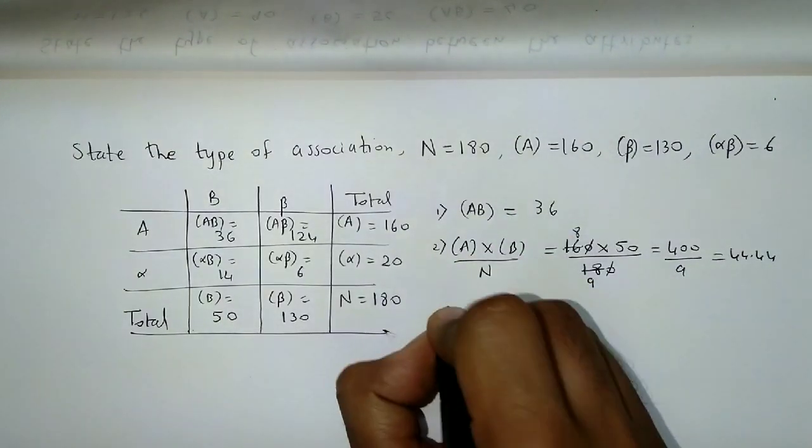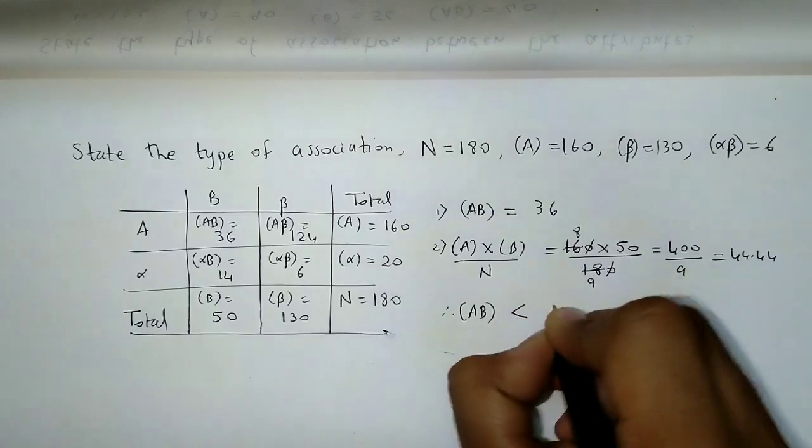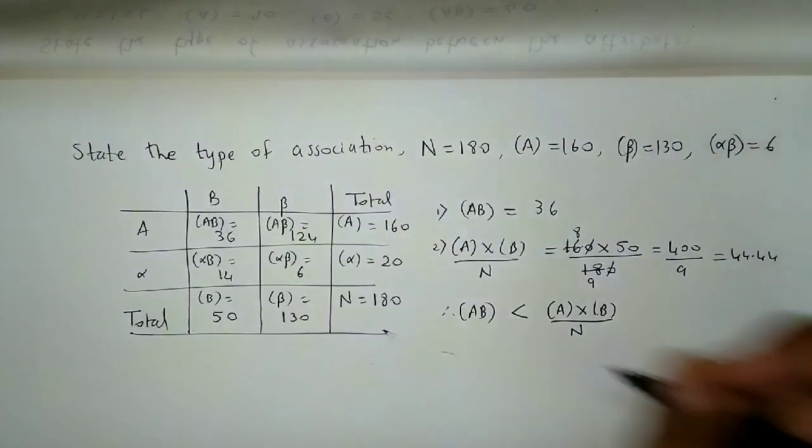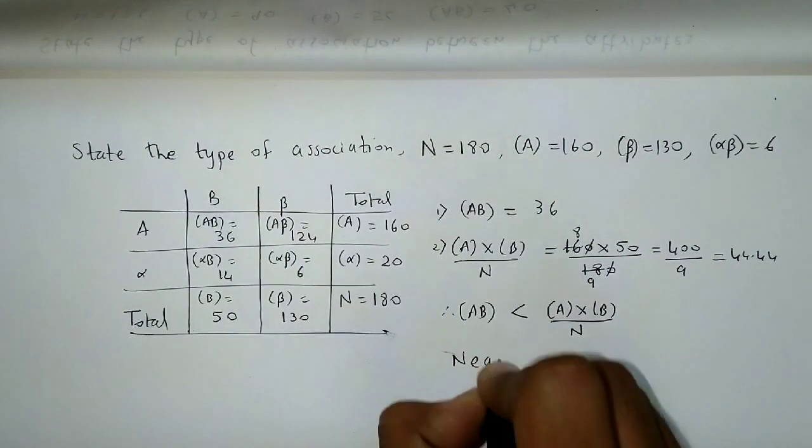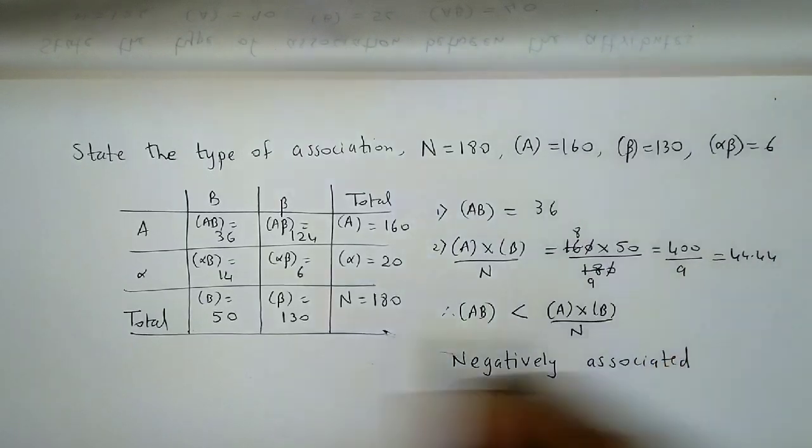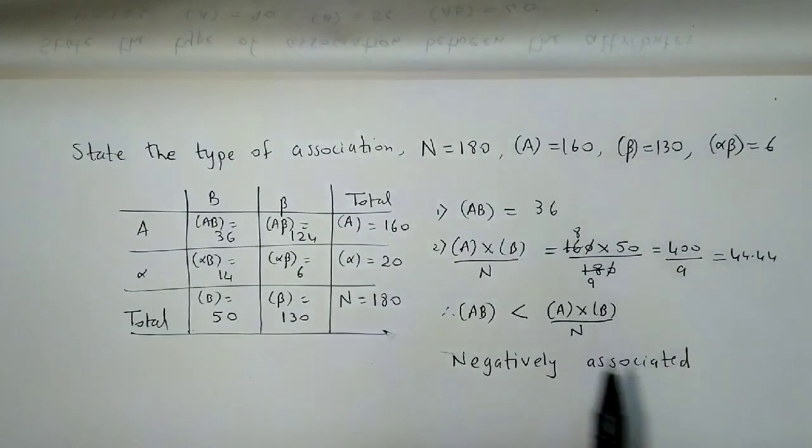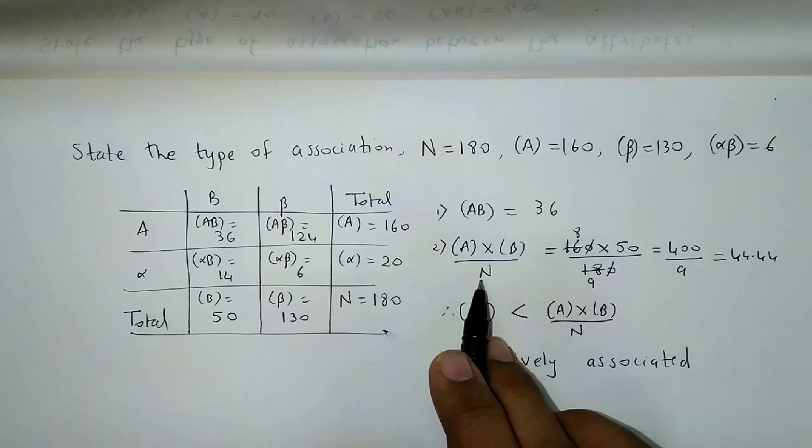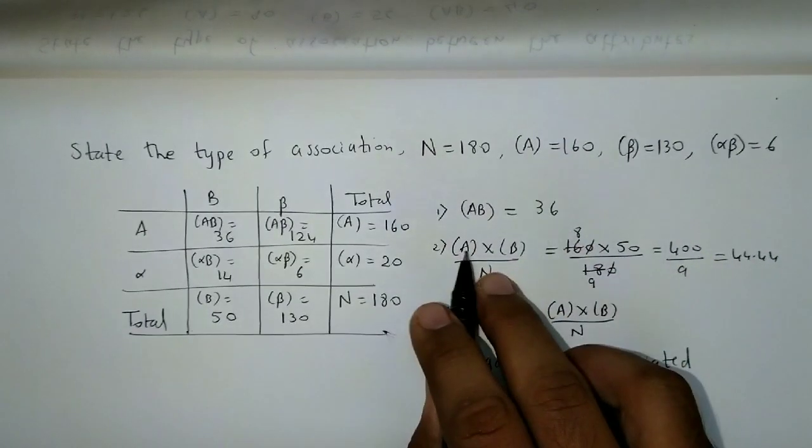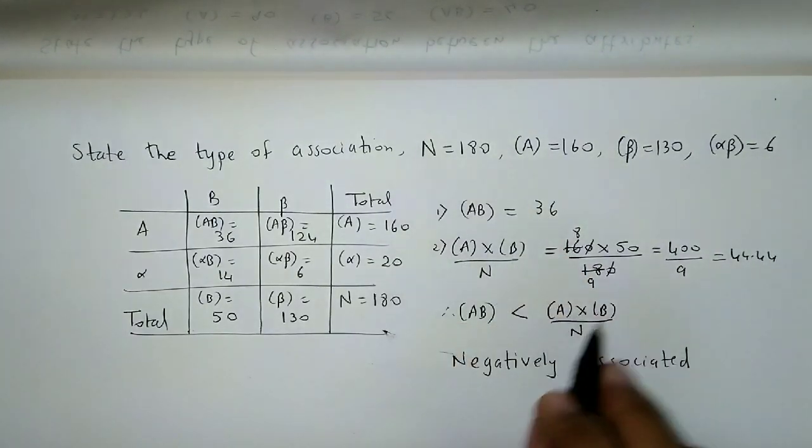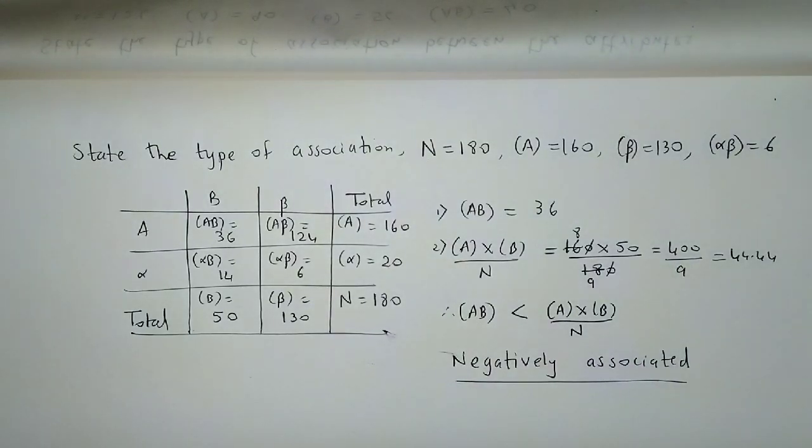So, if you observe over here, you get frequency of AB is less than A into B upon N. Hence, the conclusion would be the attributes are negatively associated. So here, first we prepared the nine square table, obtained the values AB, then compared it with A into B upon N using the comparison method. AB value is 36, and A into B upon N comes out to be 44.44. So, AB is less than A into B upon N. Hence, we say the attributes are negatively associated.